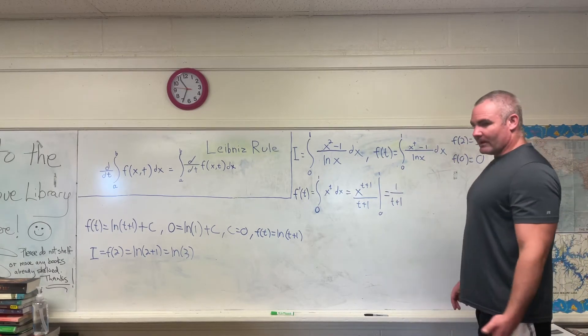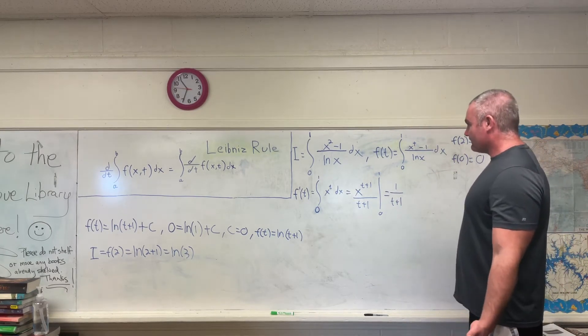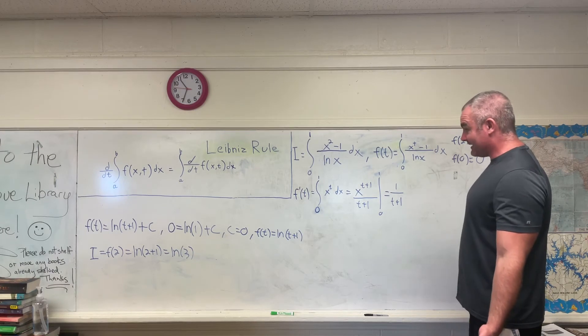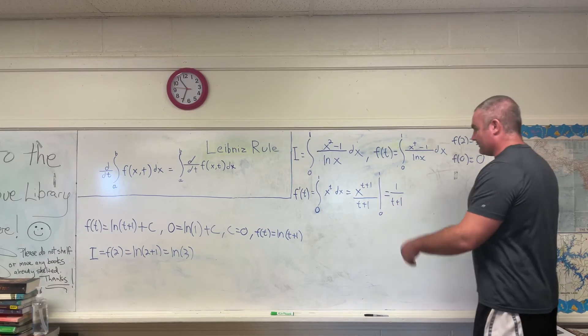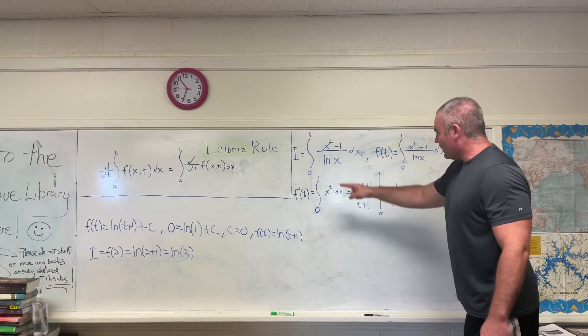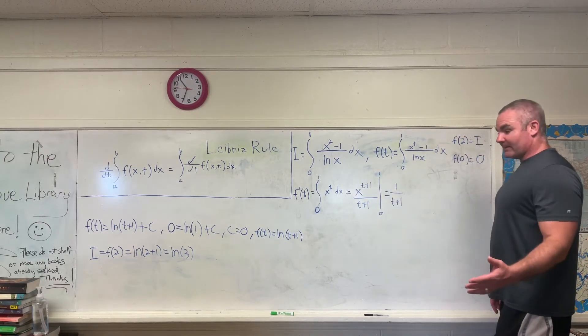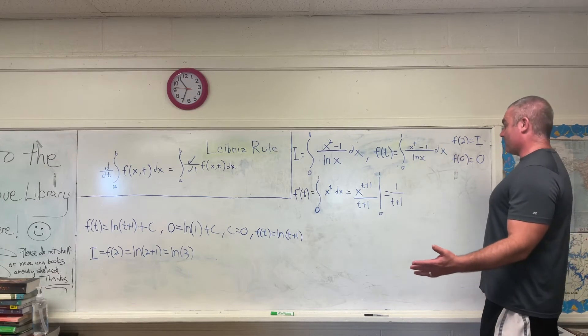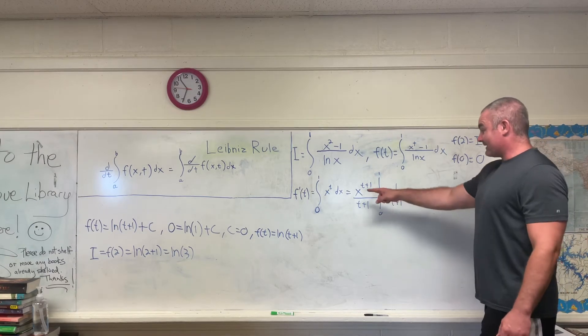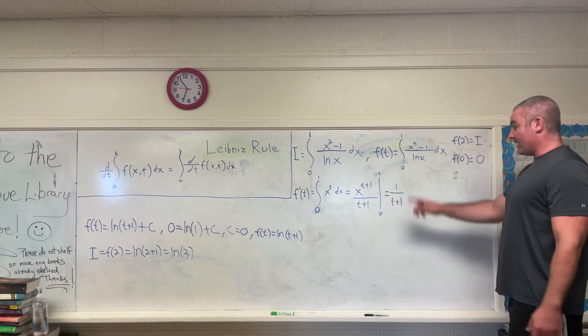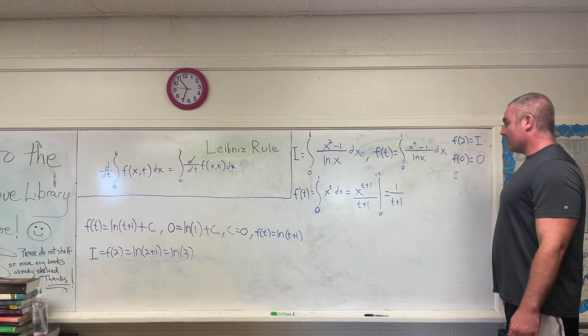So anyway, we arrive at that step. f prime of t, which is another way of saying the derivative with respect to t of this function of t, is equal to the integral from 0 to 1 of x to the t dx. Now we're getting into more familiar territory. That's just going to be x to the t plus 1 over t plus 1 evaluated between 0 and 1, which gives you 1 over t plus 1.